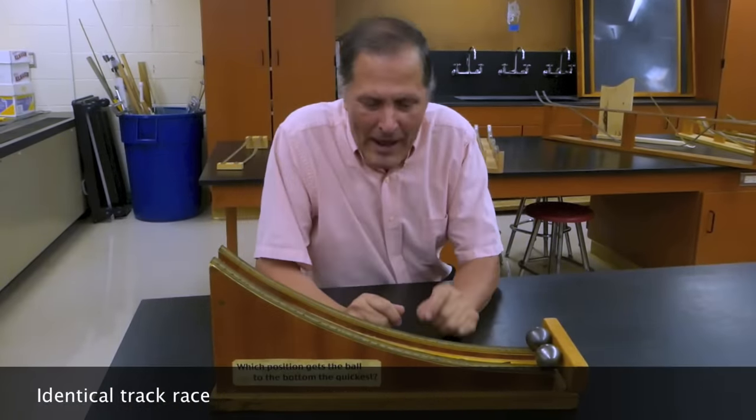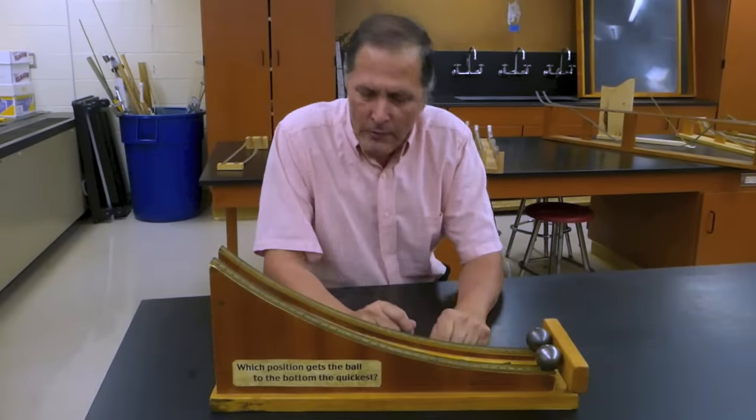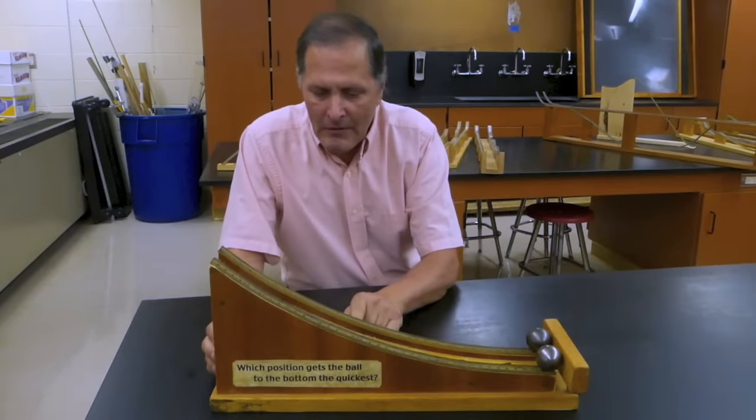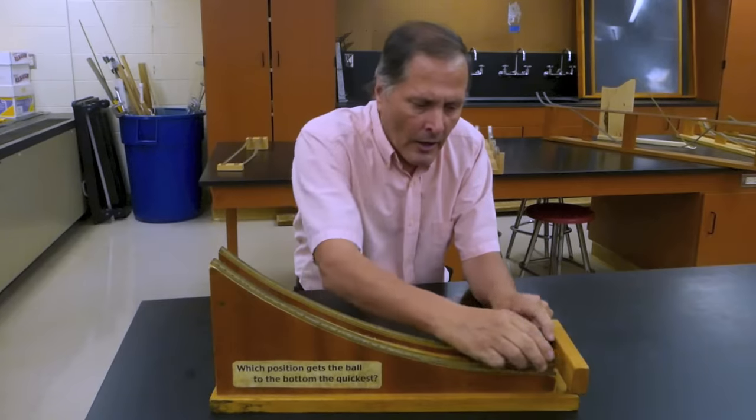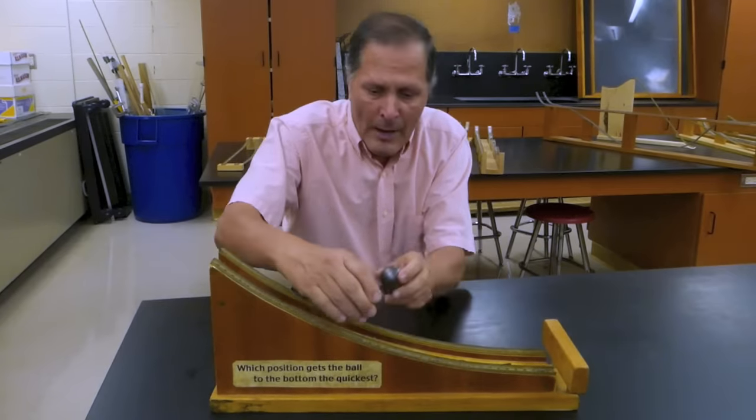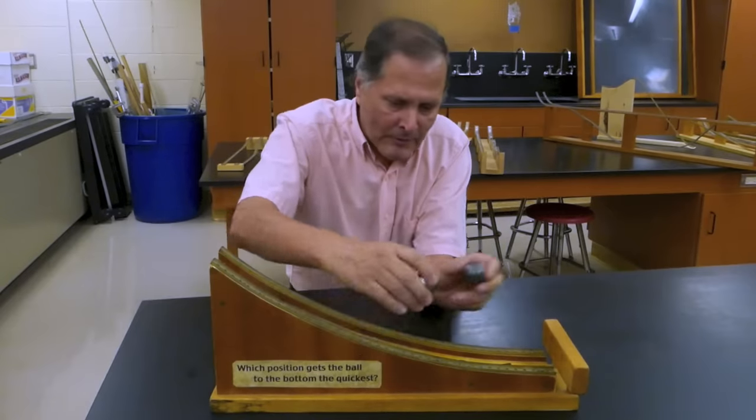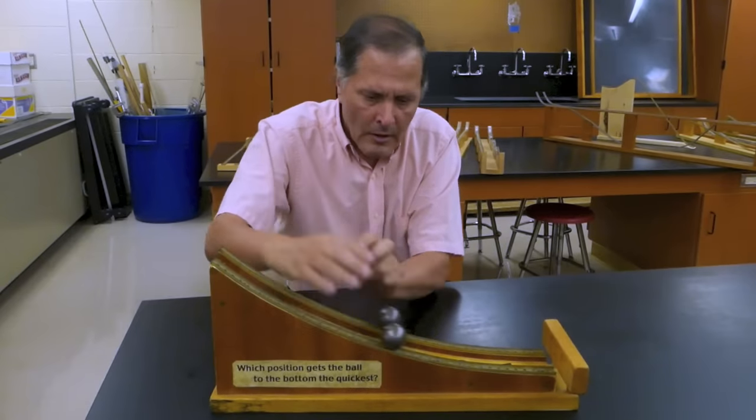Now this piece has two tracks that have identical curves, and as you can see on the side it says, which position gets the ball to the bottom the quickest. So for this piece, if we lift the balls to the same position and release them, we would expect them to get down to the bottom together.